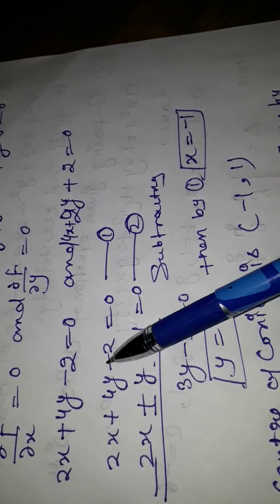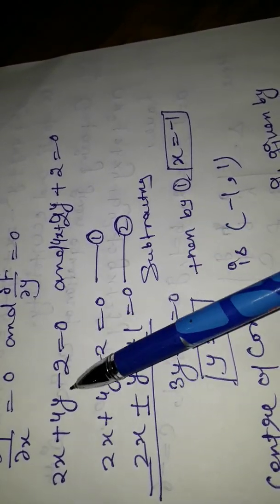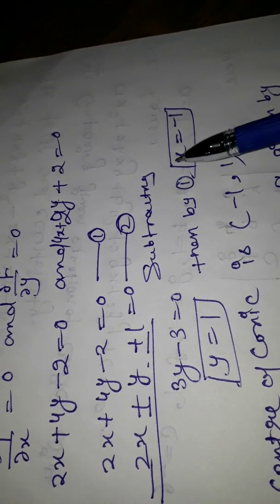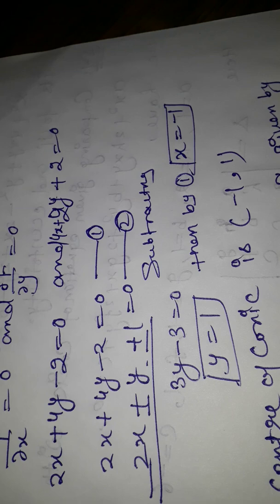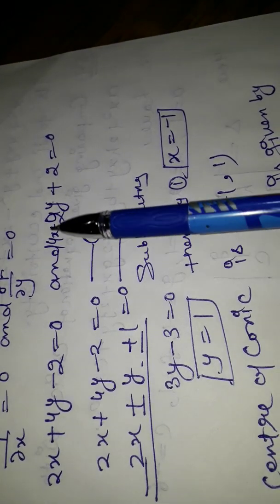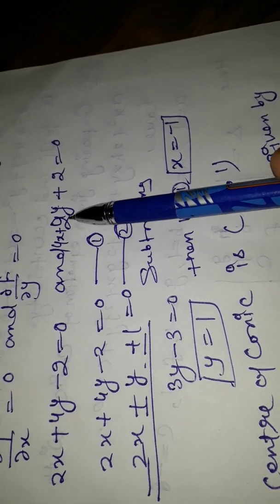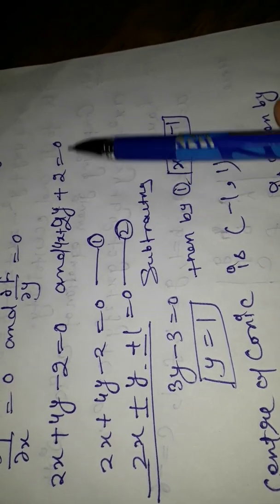The values of x and y obtained by solving these two equations are called the center of the conic. Dividing the first equation by 2, we get x + 2y - 1 = 0.